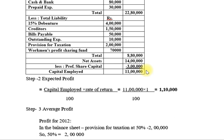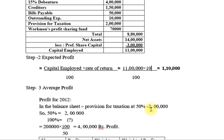Step 2: Expected Profit. The equation is: Expected Profit = Capital Employed × Rate of Return / 100. Putting in the values: ₹11 lakhs × 10 / 100 = ₹1 lakh 10,000. We have now found our expected profit.